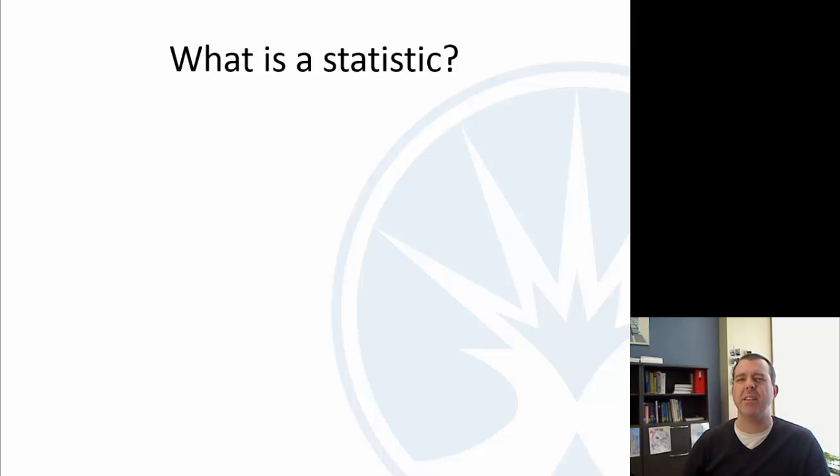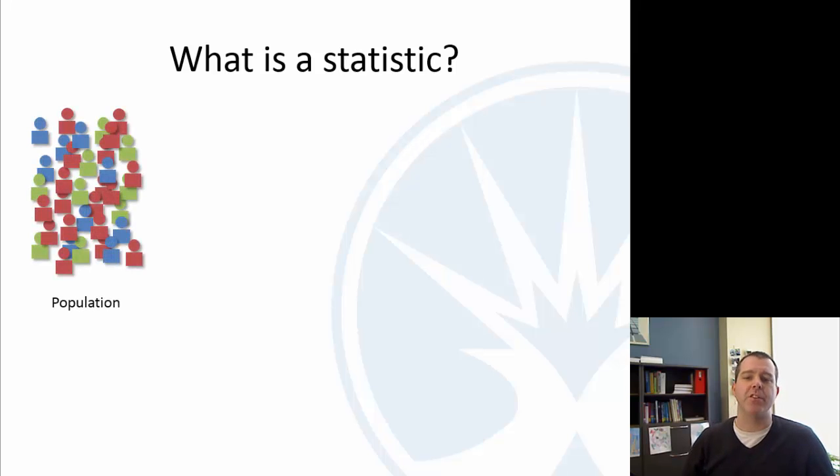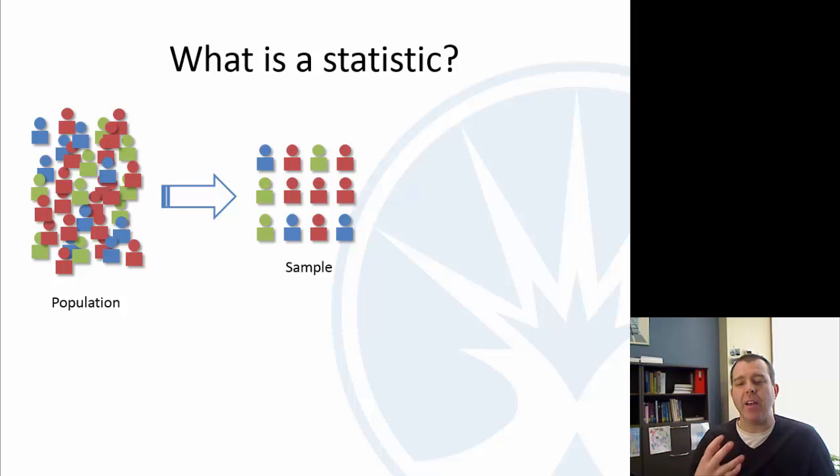Let's talk a little bit about what a statistic is. In our class, that word actually has a very specific meaning. So if we look at a population, here I've got a population of people, my fancy people drawing here. We select from that a sample. So if I calculate something about a population, which we usually can't do, that's called a parameter. So that's like the average age of all ECC students. When I calculate something from a sample, it's called a statistic.